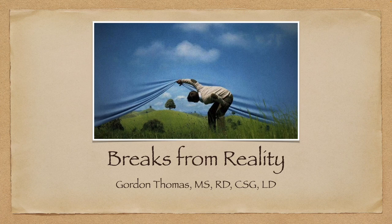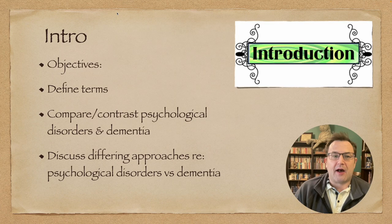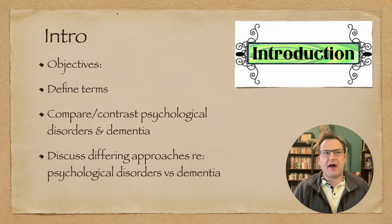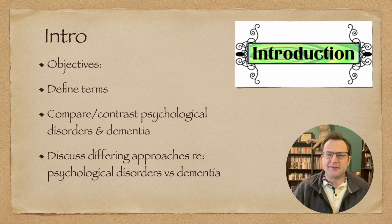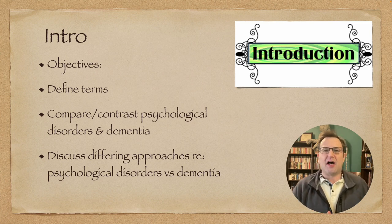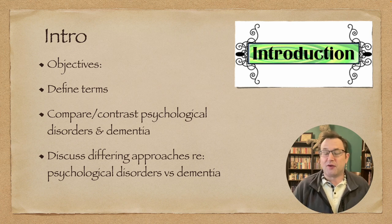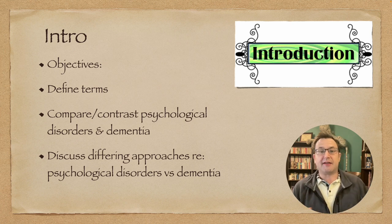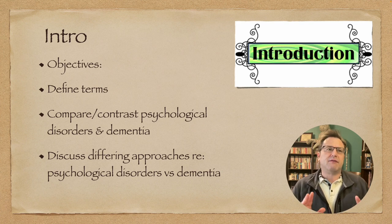Hello everybody and welcome to Unit 3. We're going to be discussing psychological disorders, dementia, and end of life. I know that sounds a bit strange as a set of topics to put together, and it might also sound strange for a nutrition course, but they all do relate and are important for their impact on nutrition.